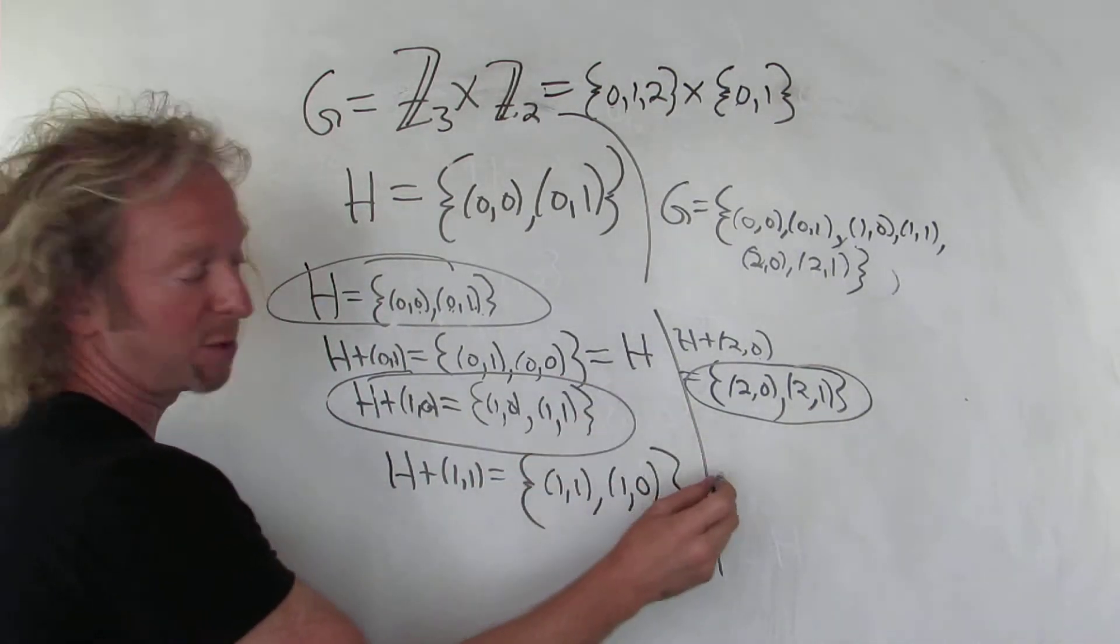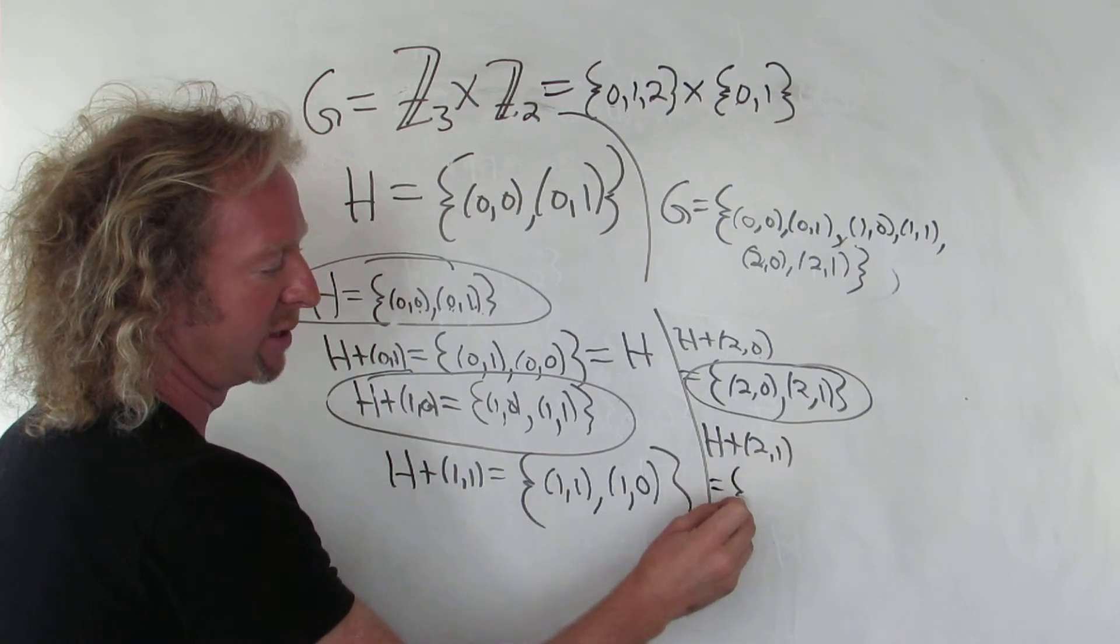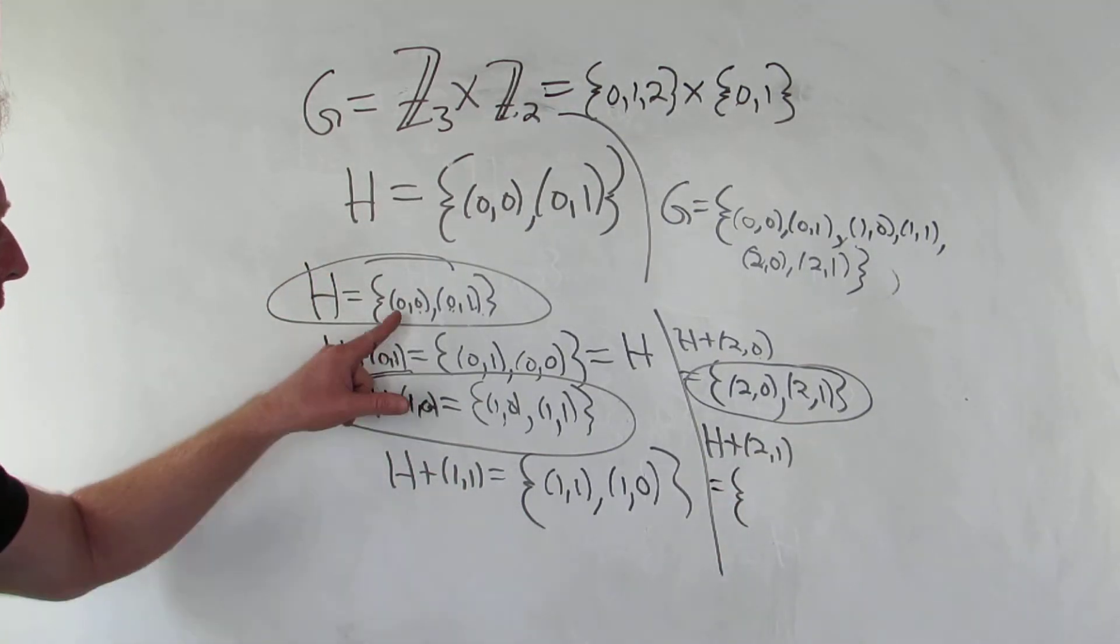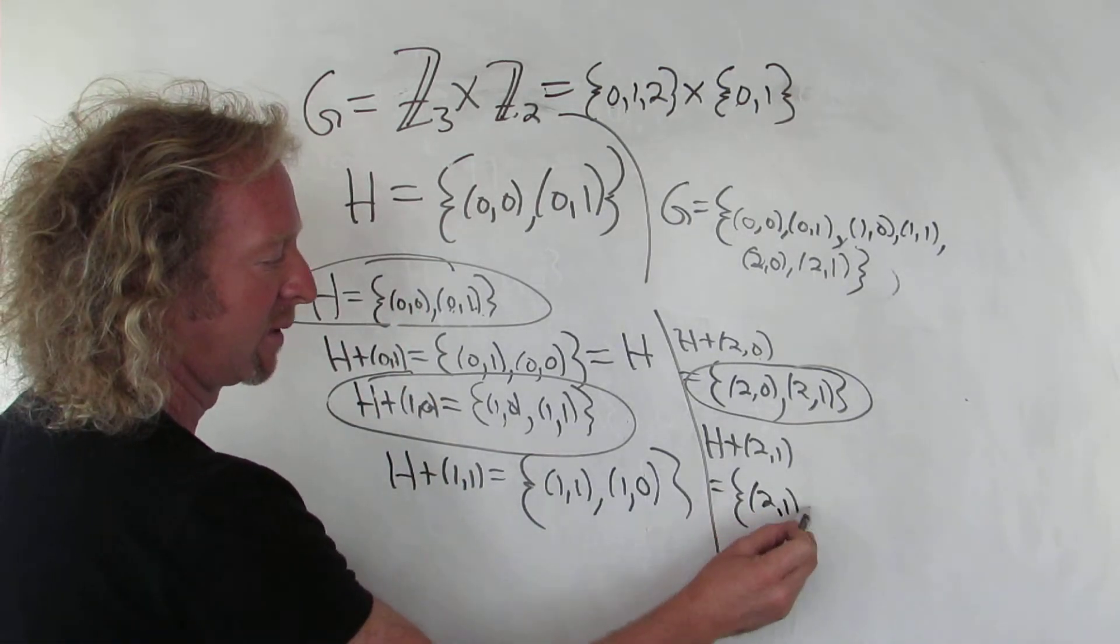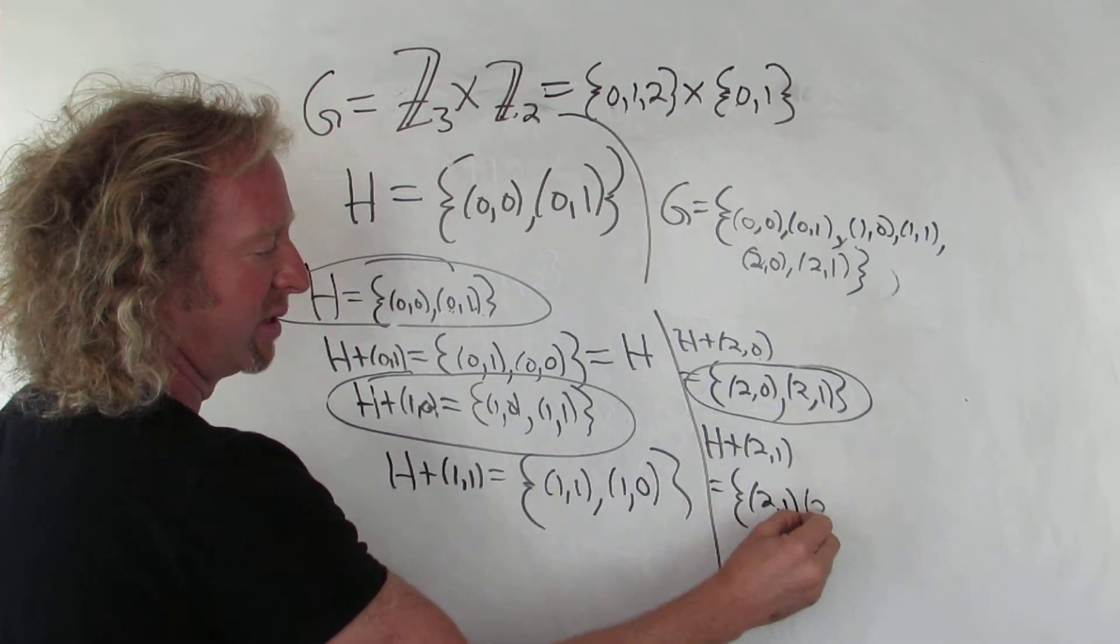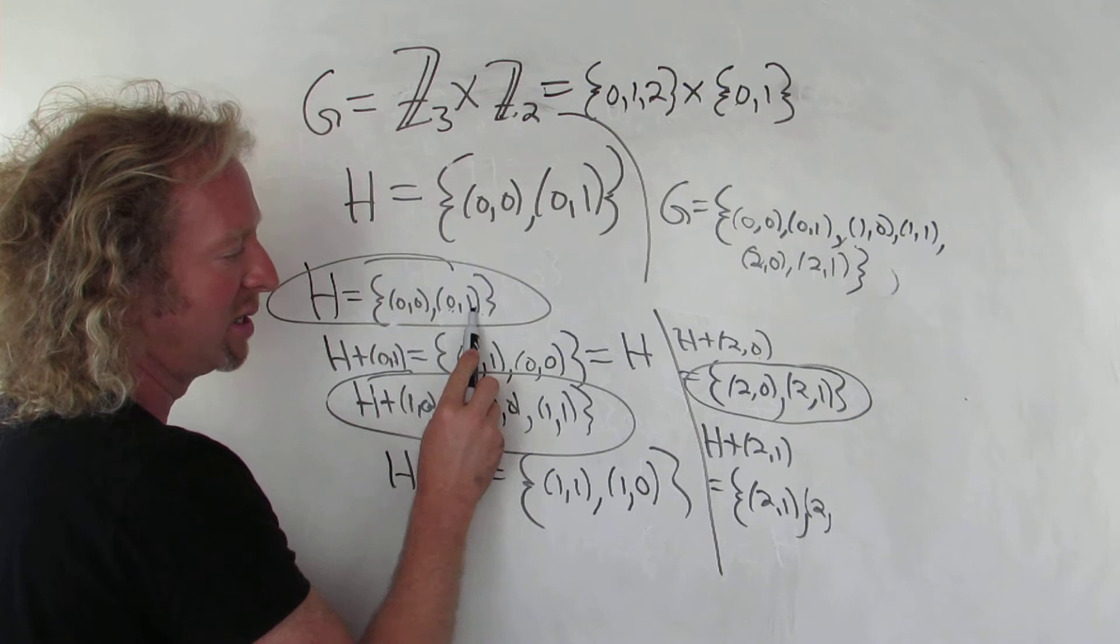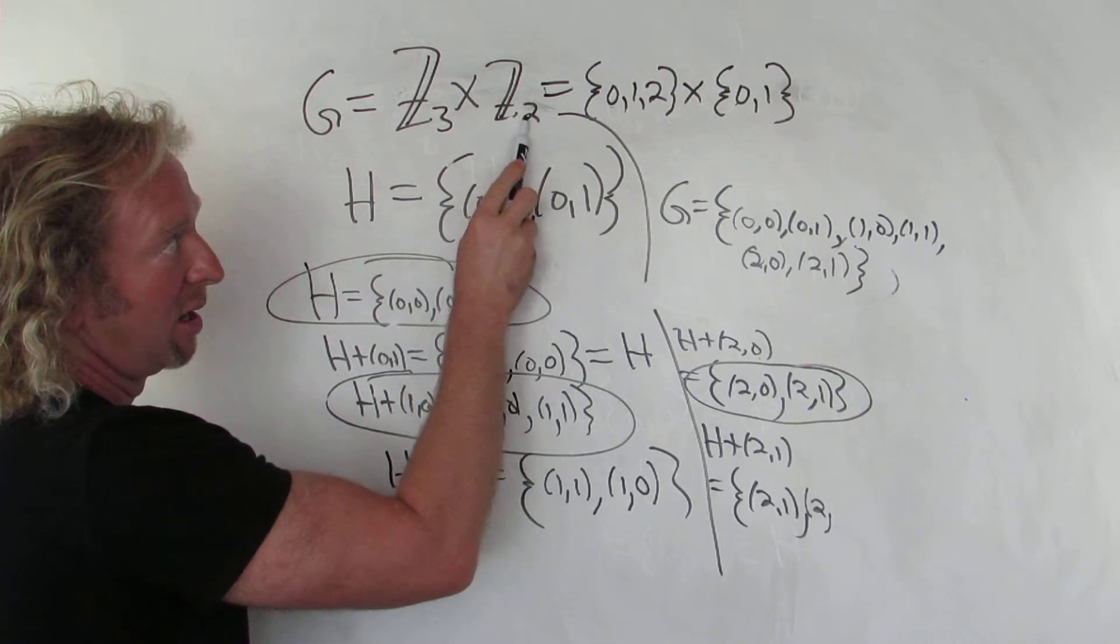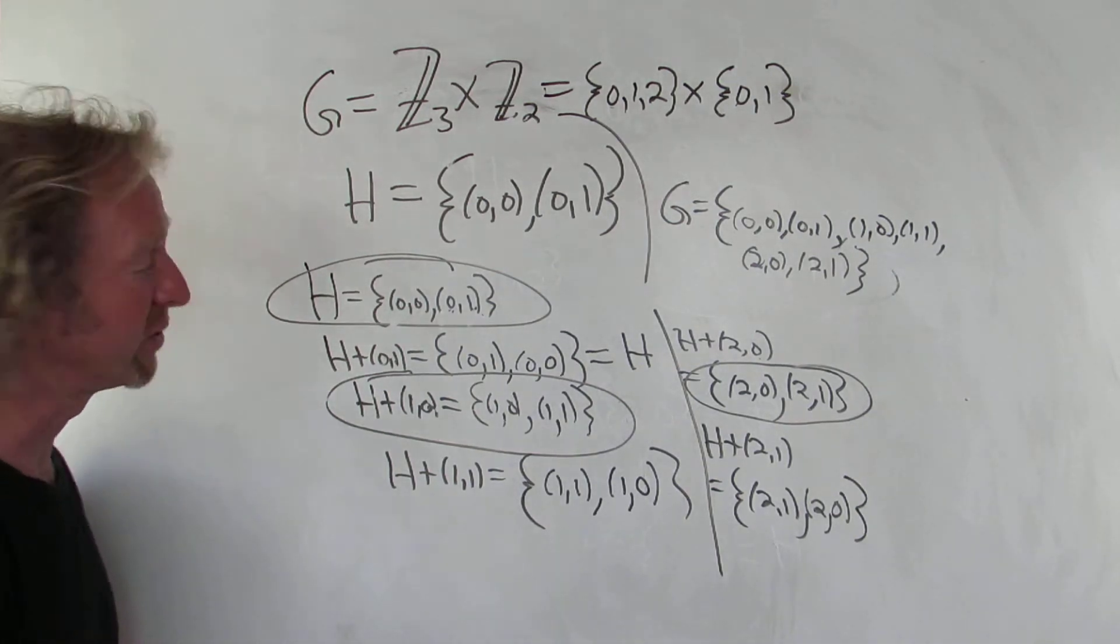And now let's do H plus (2,1). Hopefully you can still see here. So H plus (2,1). That's going to be (2,1). And then 2 plus 0 is 2, we're in Z3. And then 1 plus 1 is 0, right? Because we're in Z2 here. So the same thing. So we only have 3 cosets.